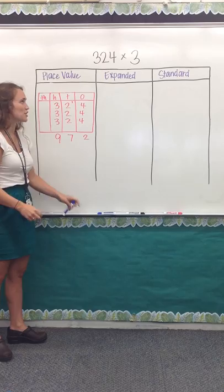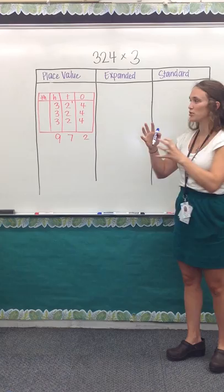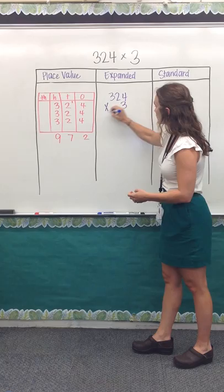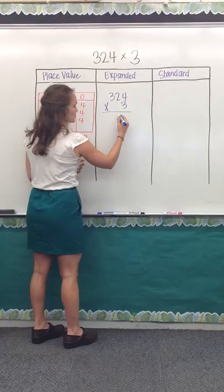Now we'll shift over to the expanded form. With this form, they break down the multiplication problem into numbers that are easier for them to multiply. So for example, if we have 324 times 3, we want them to be able to vocalize and fully understand that this is 3 times 4.